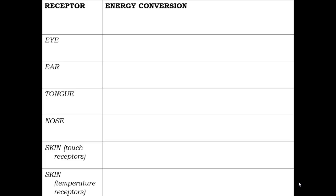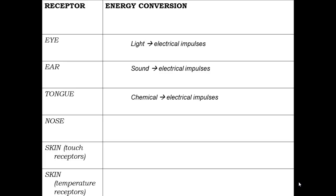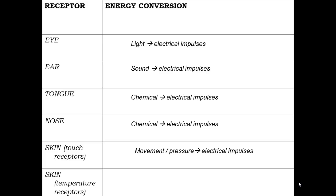Receptors convert one type of energy into electrical impulses. The eye converts light energy, the ear sound energy. The tongue converts chemical energy — it detects chemicals dissolved in your saliva which bind to receptors in your taste buds, generating electrical impulses. Similarly, your nose converts chemical energy as airborne chemical molecules bind to receptors. Your skin has touch receptors converting pressure into electrical impulses, and temperature receptors that convert heat energy and detect changes in temperature.